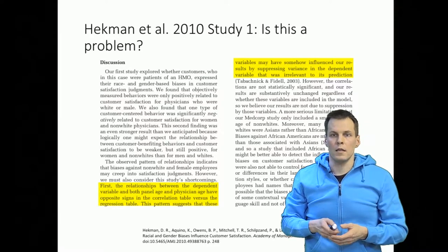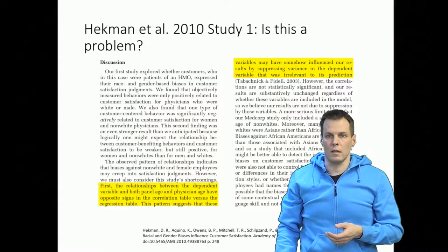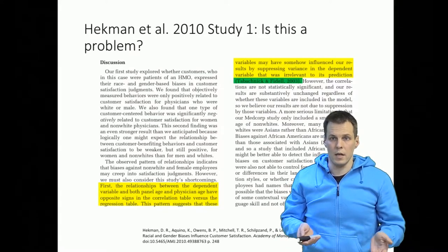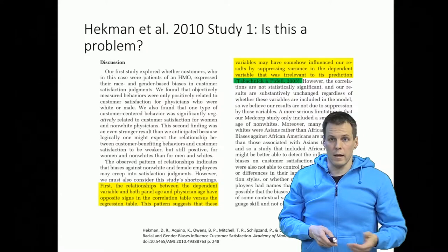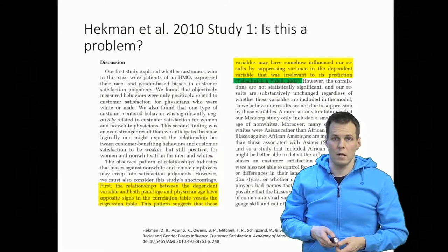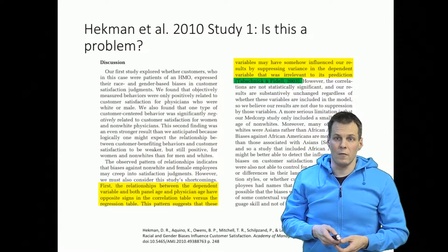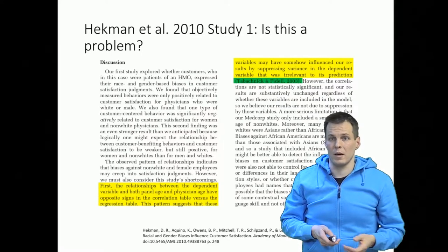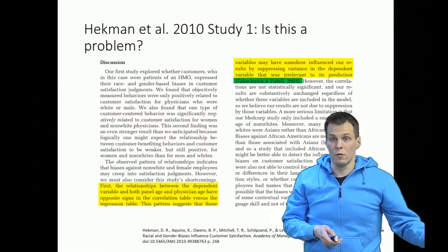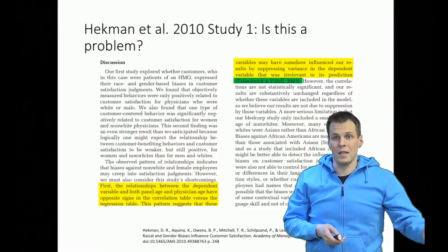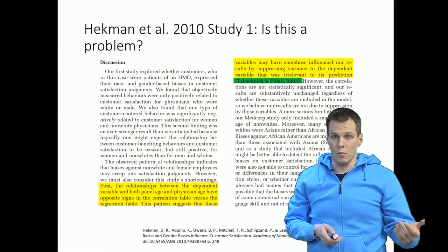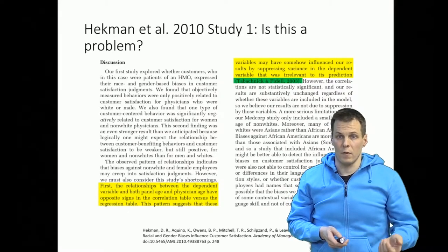Then they cite a textbook in statistical analysis that presumably explains what they mean. Unfortunately that's a big book and they don't give a page number, so we can't really meaningfully check what that book says about suppression. So whenever you explain something and then you give a reader a book to read, then at least give the reader some indication which chapter or which page of that book explains the fact that you're referring to.